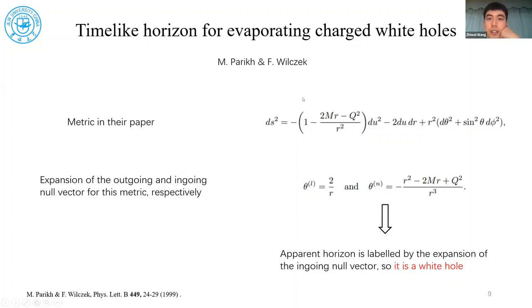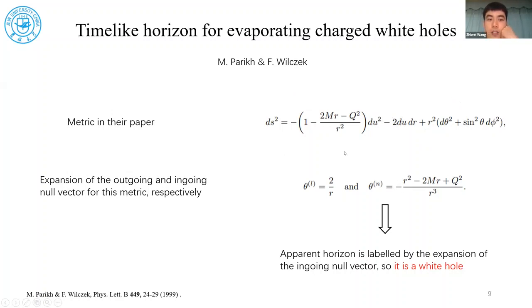This is a short proof that the metric used in the original paper is in fact a white hole. If you calculate the expansion for the null vector — the outgoing null vector and the ingoing null vector — you will find that the expansion that locates the apparent horizon is in fact the ingoing null vector, which means the horizon must be a white hole. This is a very small mistake; they may just not have paid much attention to it in their original paper.